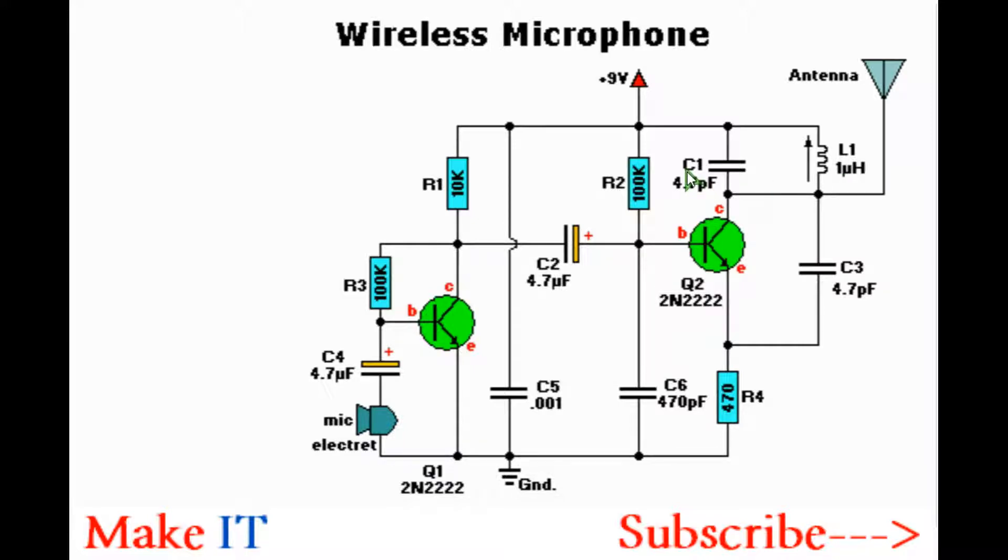You can also instead use a trimmer or adjustable capacitor for C1 with the capacitance of 0 to 40 picofarads or even 0 to 60 picofarads. This is good because you can obtain different frequencies as you wish.